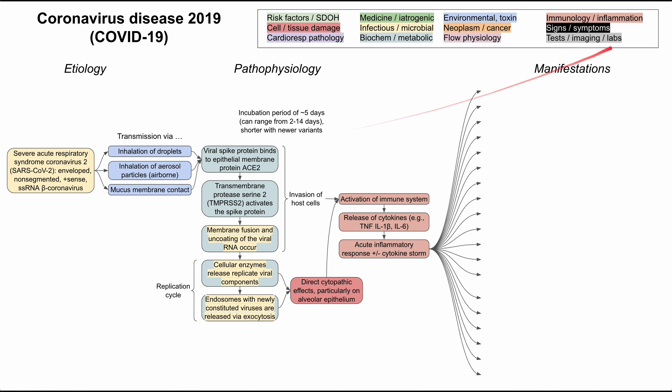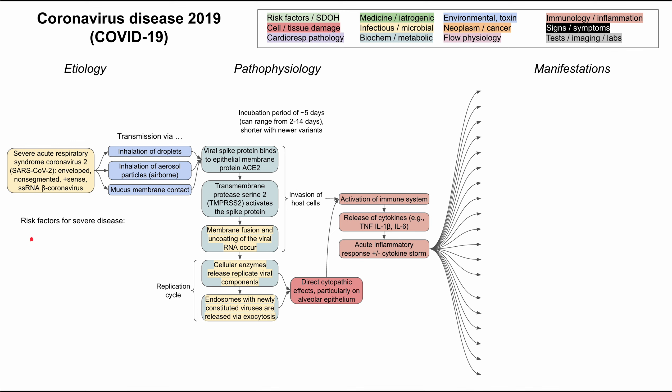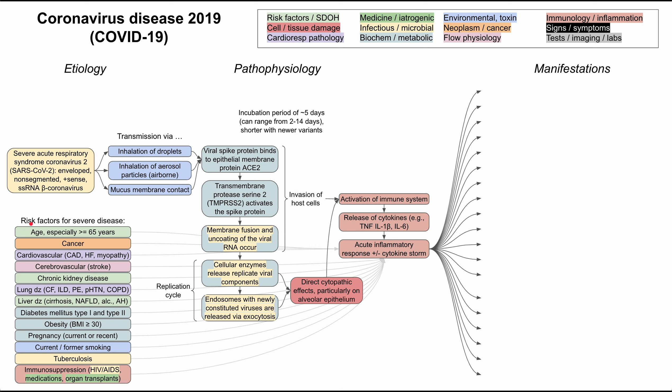Before going into the manifestations, let's briefly discuss the risk factors for severe disease. Everybody can catch COVID-19, but there are certain categories, diseases, and subsets of people that are more likely to have severe disease.